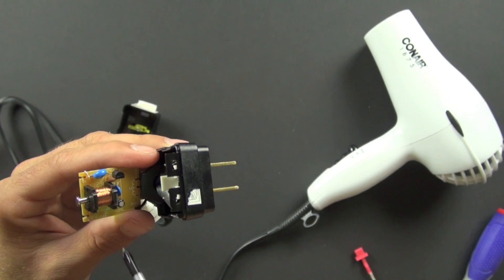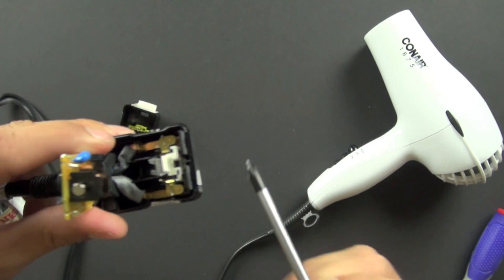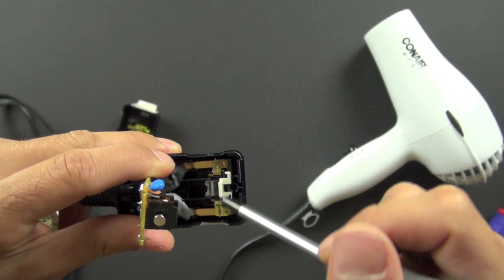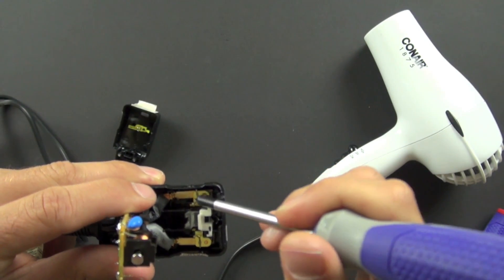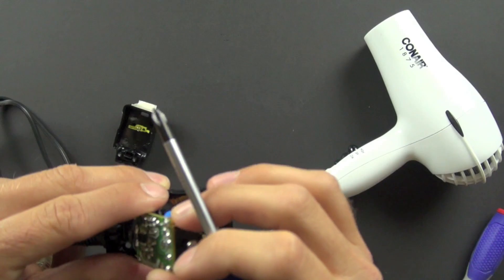And then if you look on the inside, you can see the backside of the plugs or the prongs, I should say. And those are just brass pieces with the wires that go to the circuit soldered on.